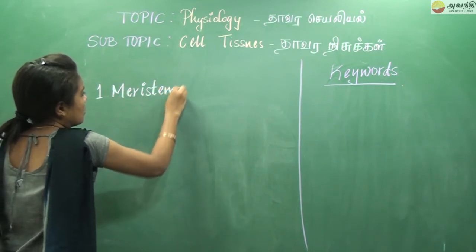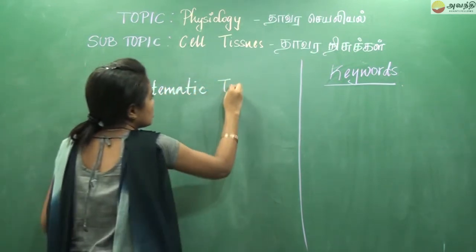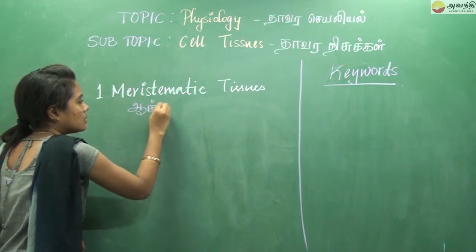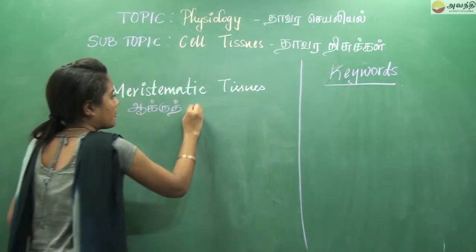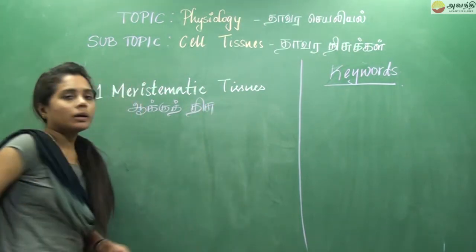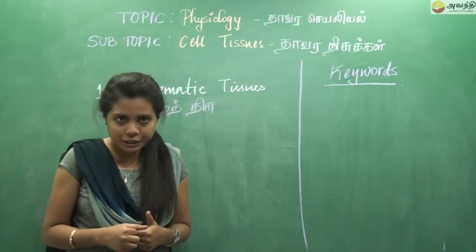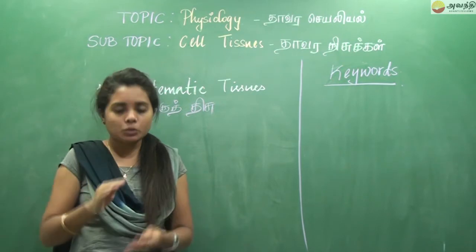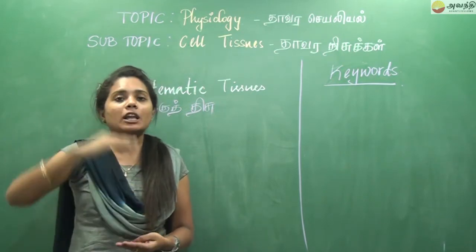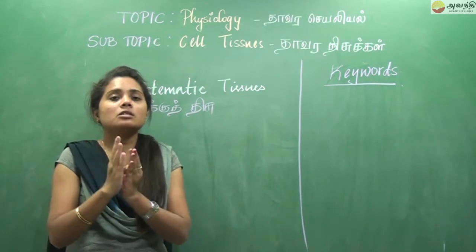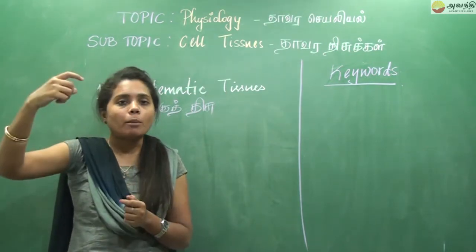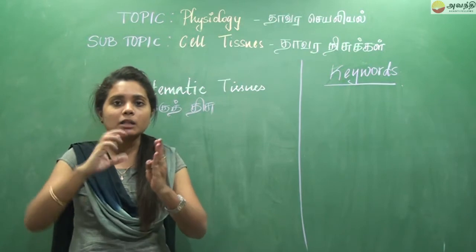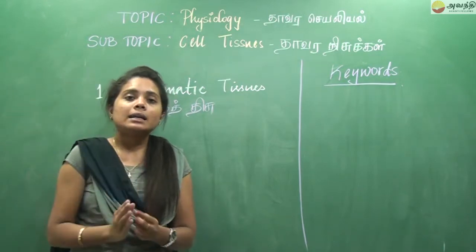The first type is meristematic tissues. Meristematic tissues contain cells that are immature and actively dividing. The cells split and new cells are formed. These cells continue to divide and spread throughout the plant.